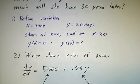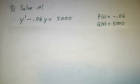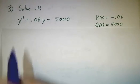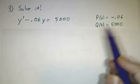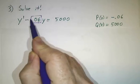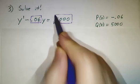Okay. Now this is a linear differential equation, so we can put it in standard form. Standard form is the derivative minus 0.06y is 5,000. So our p(x) is just negative 0.06. It's a constant. And our q(x) is 5,000.